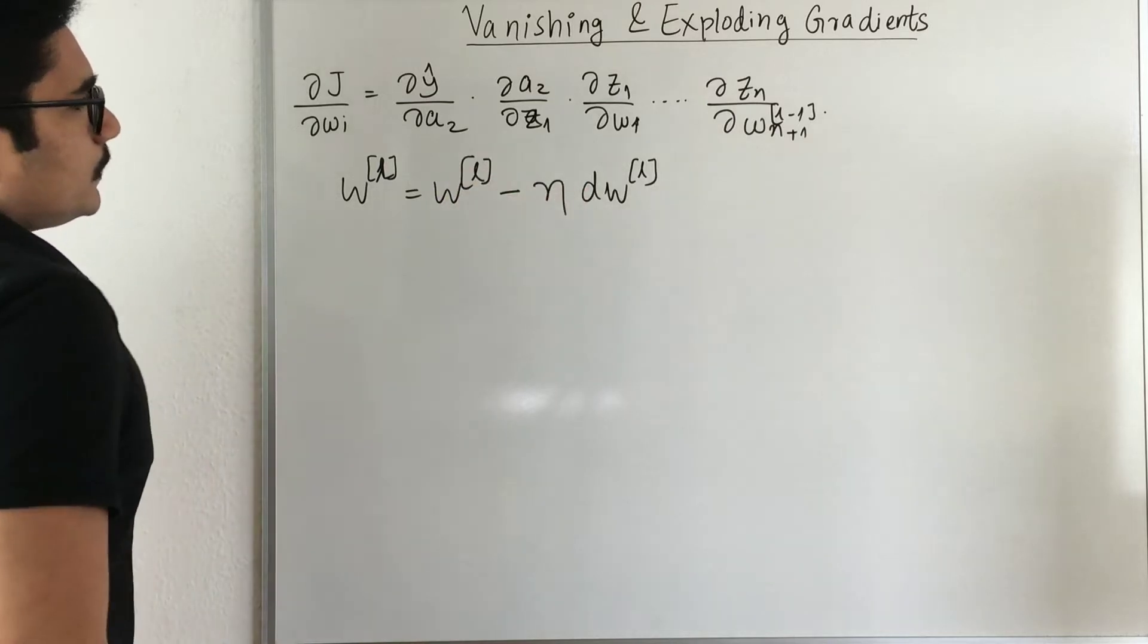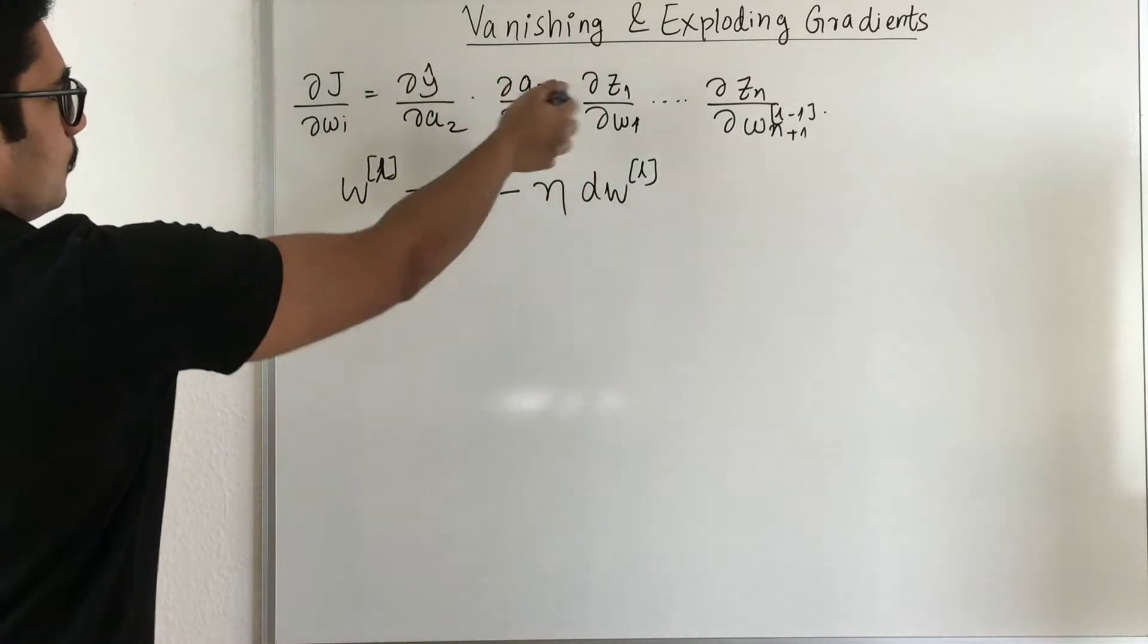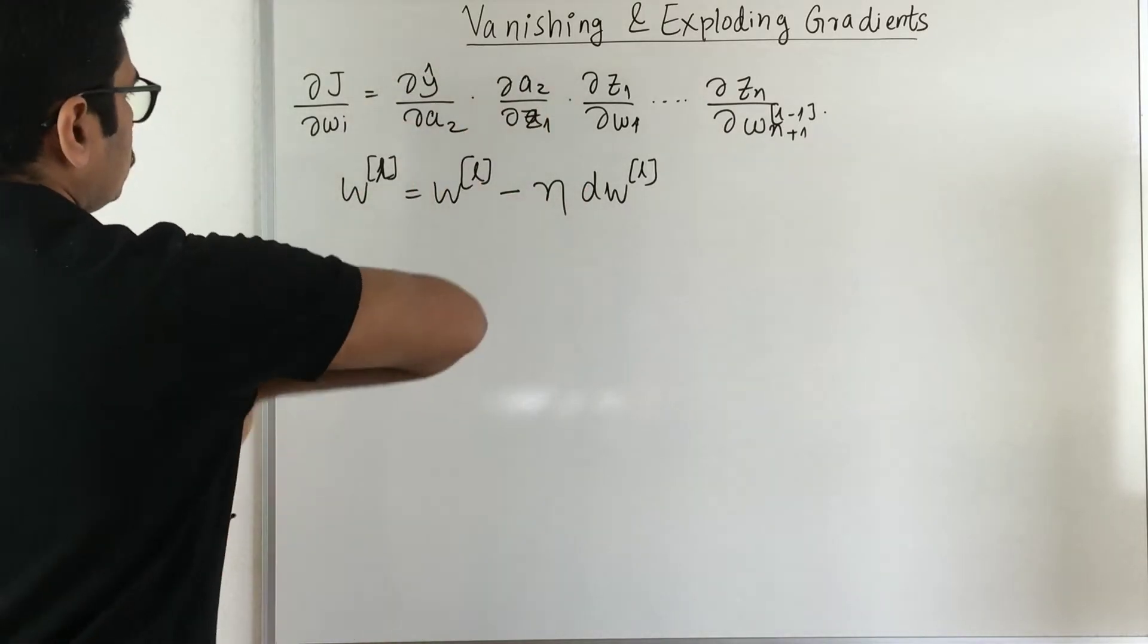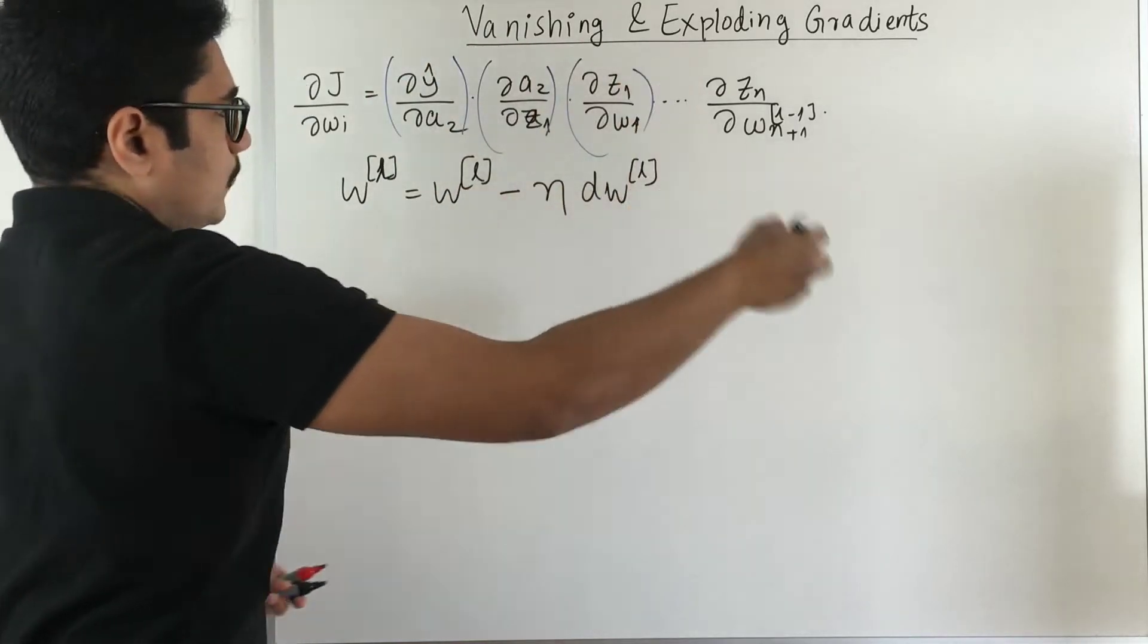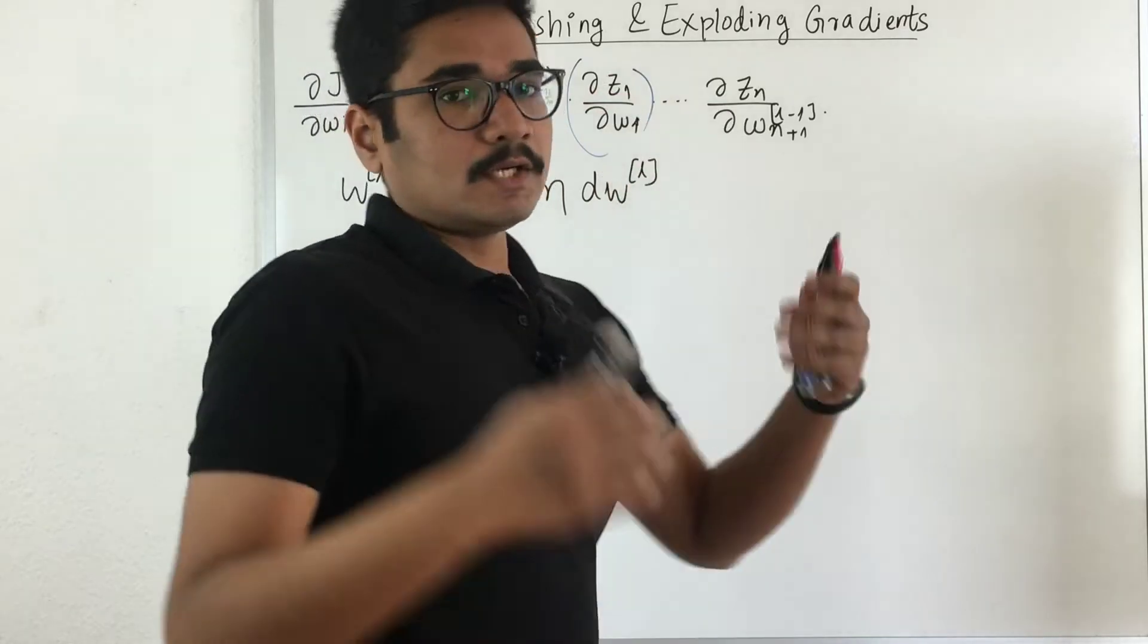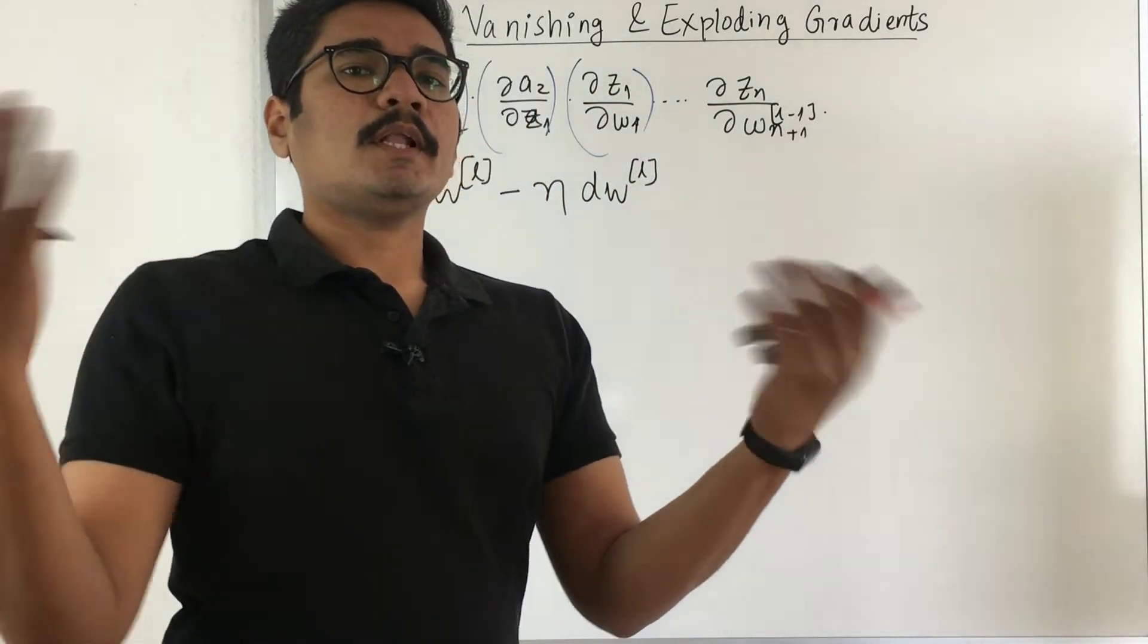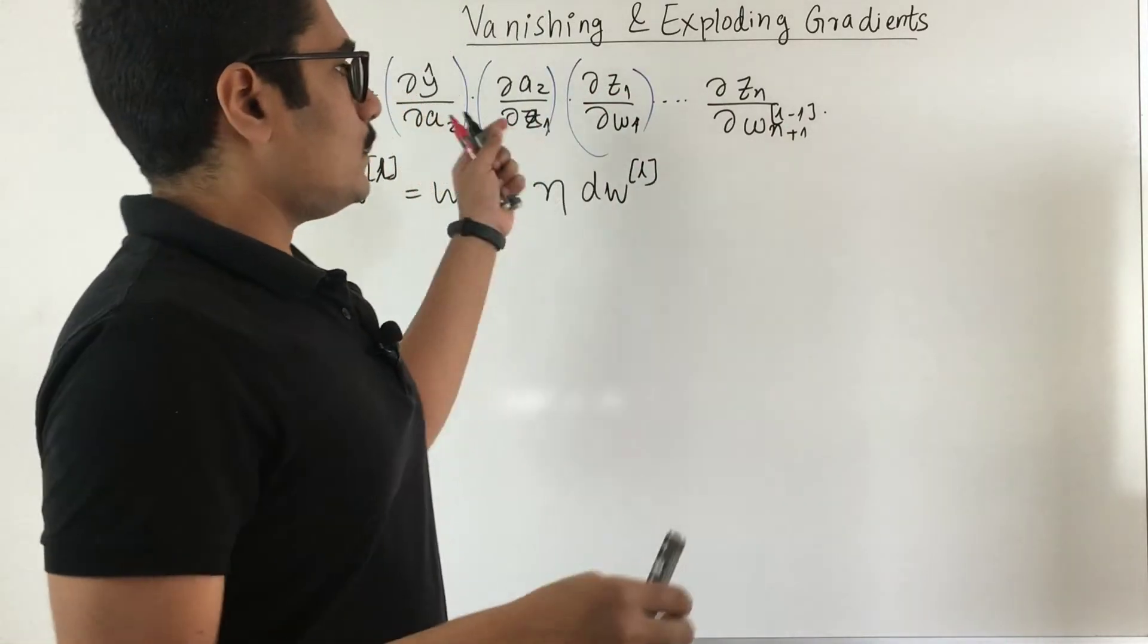Now in this particular equation, when we compute these gradients, these are essentially small multiplication values that we multiply across. If you have a large pool of different layers, then you can have n number of different small gradients.